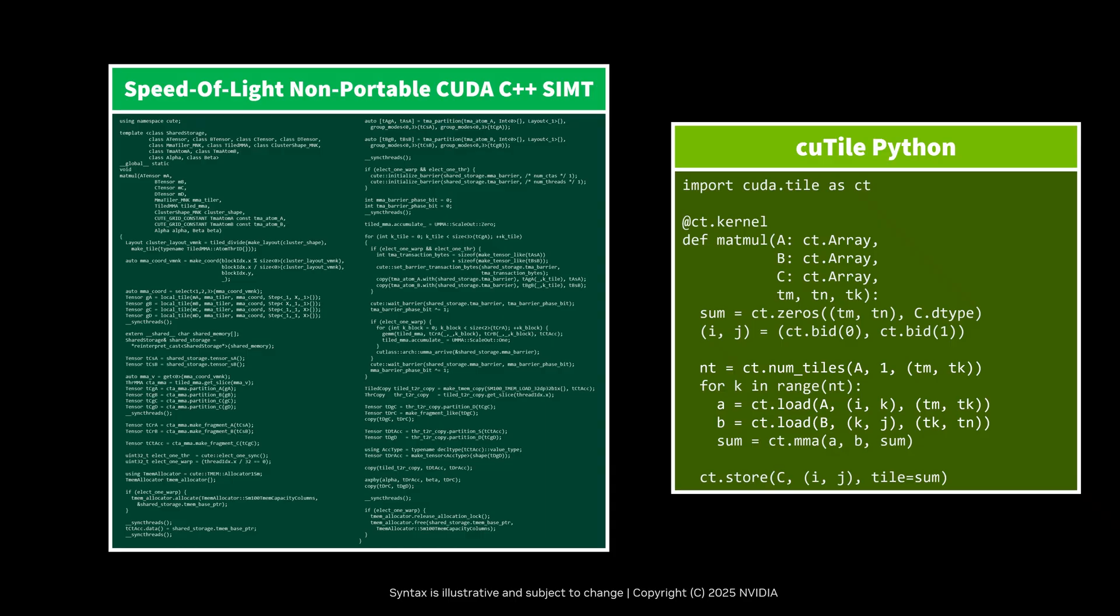To reach speed of light for a matmul before Qtile, you'd have to write something like the CUDA C++ code on the left, which is no easy feat. It's also not portable. The code you'd write would change from GPU architecture to GPU architecture. With Qtile, we can write the simple code on the right and get good and portable performance.